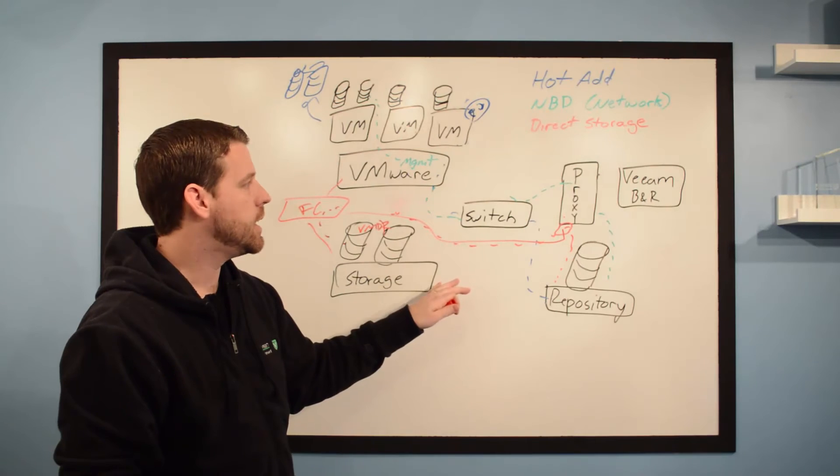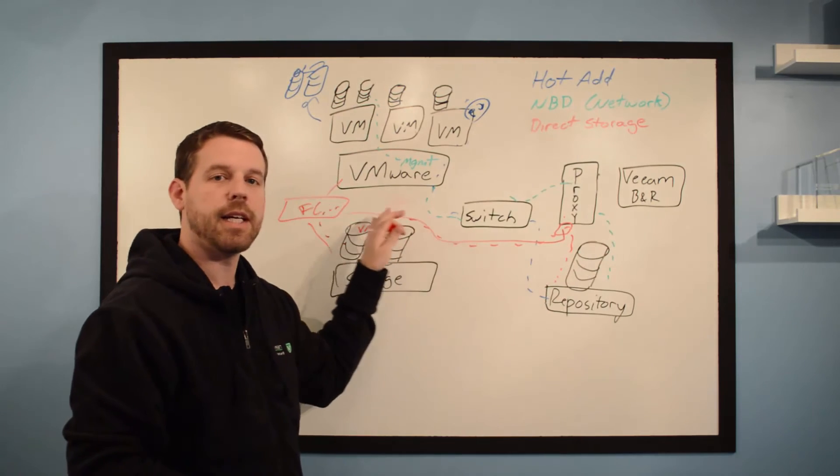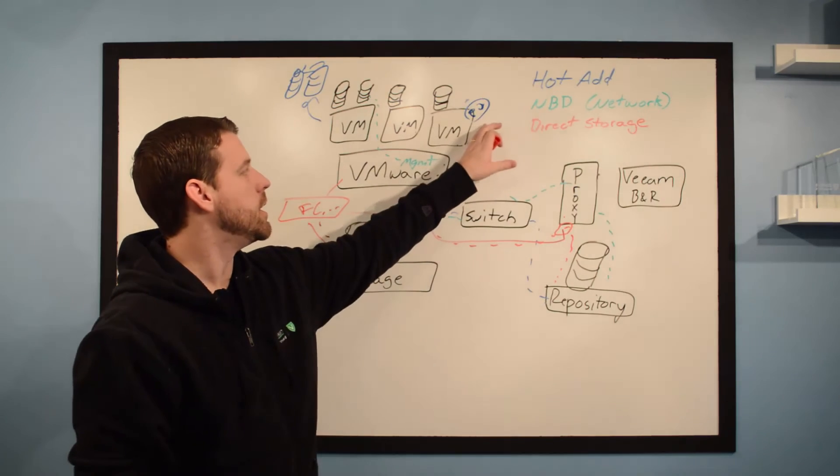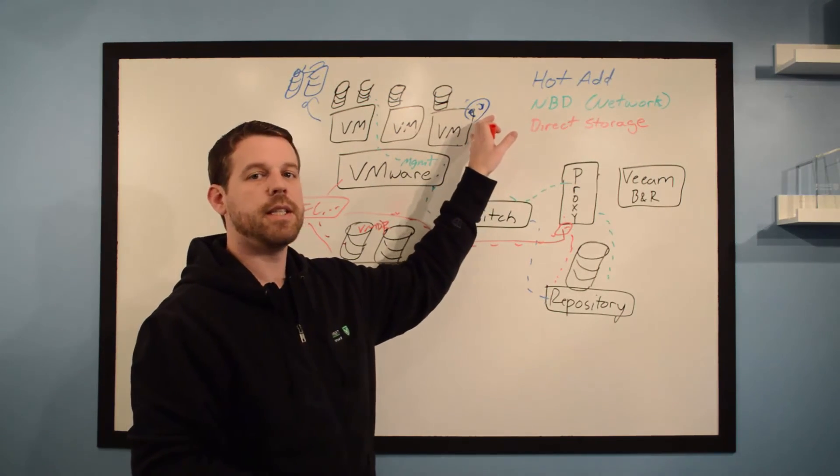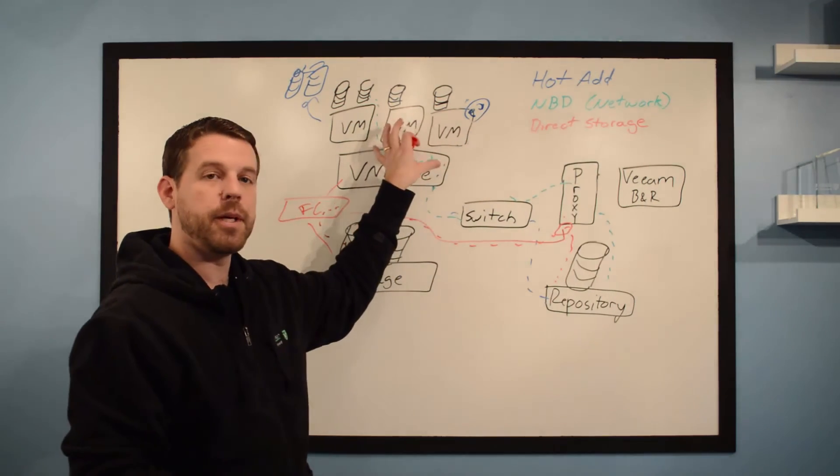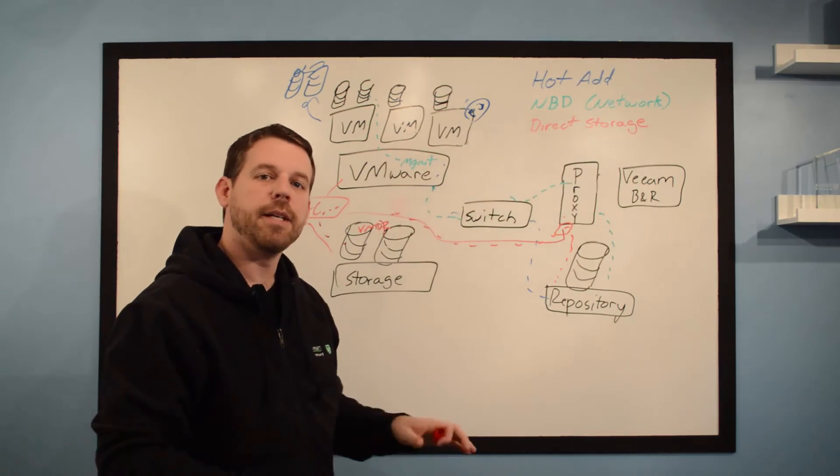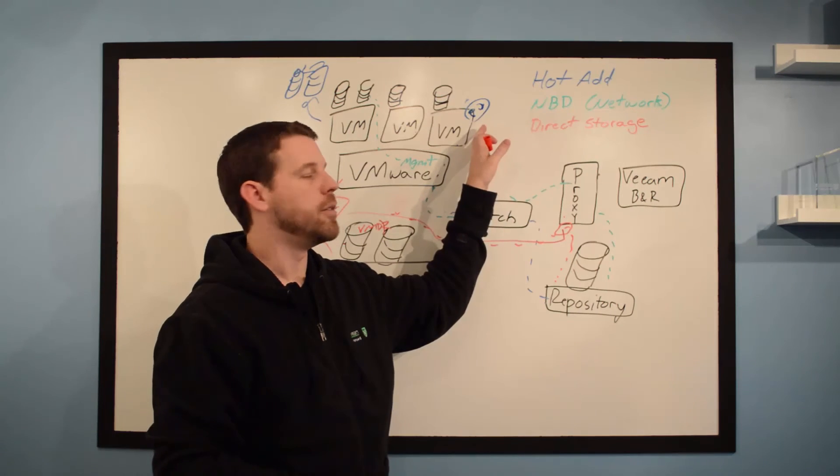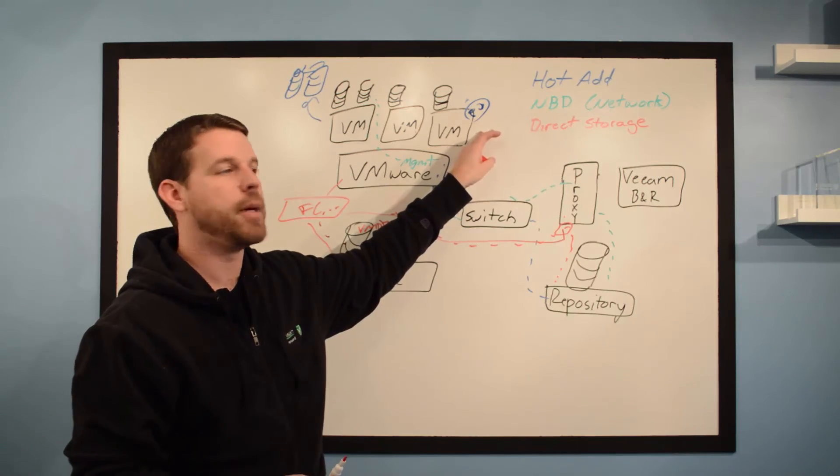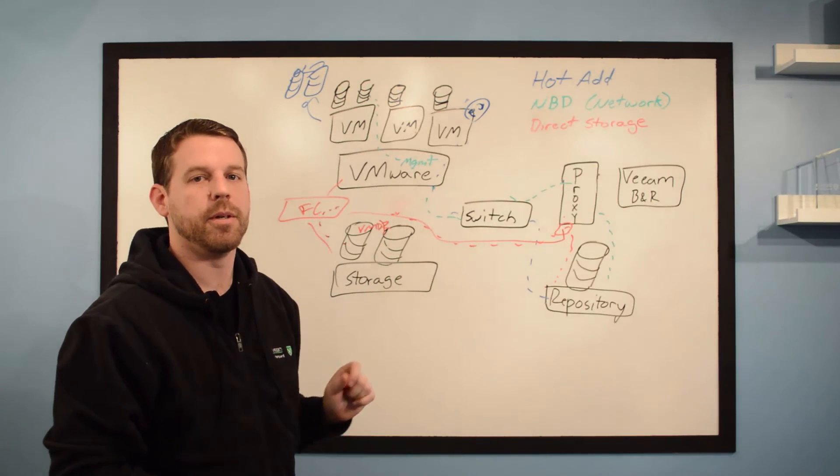Now, the downside to this is you're probably going to have to have some sort of physical machine, right? Because you need physical connectivity to that storage network. If you're doing NFS, it's possible that you can still use a virtual machine as a proxy, and there's ways to do it as well with Fiber Channel. However, you will be putting load on the network because what's going to happen is you're still going to be using at least the virtual switches here. So I don't recommend using direct SAN mode with any sort of virtual appliance. Hot add mode with virtual appliances is highly recommended. If you have physical proxies and you have the ability to do so, direct storage mode is highly preferred.